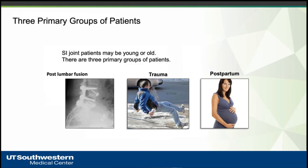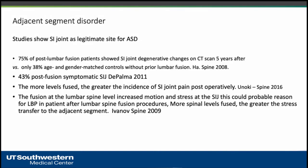When a patient comes to the clinic with sacroiliac joint problems, it is usually after trauma, postpartum, or — most commonly in spine surgery practice — after surgery. These are the three main causes of sacroiliac joint pain or dysfunction. The most important in our setting is post-surgical, specifically post-laminectomy syndrome. Adjacent level disease caused by fusion is well recognized: if a patient has L4-5 fusion, we tell them the levels above and below can worsen over time. The sacroiliac joint is the level below L5-S1.